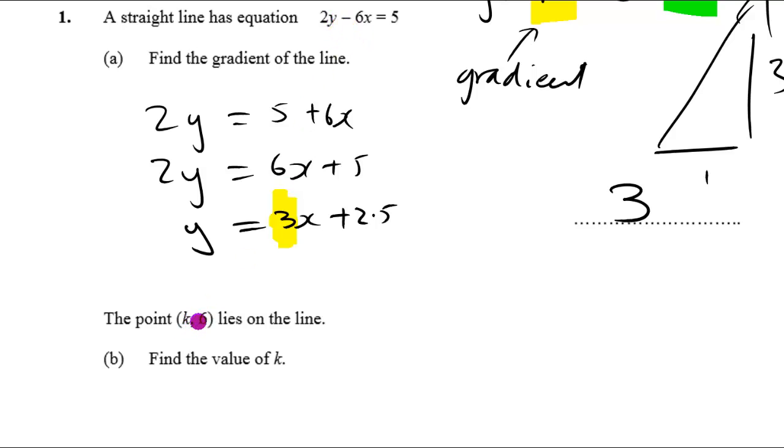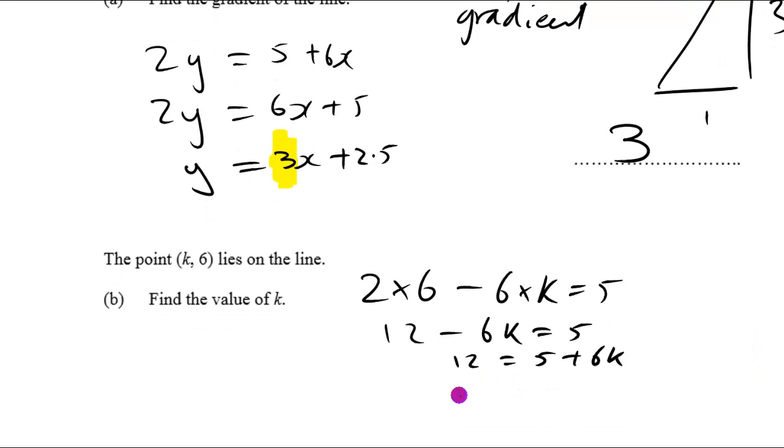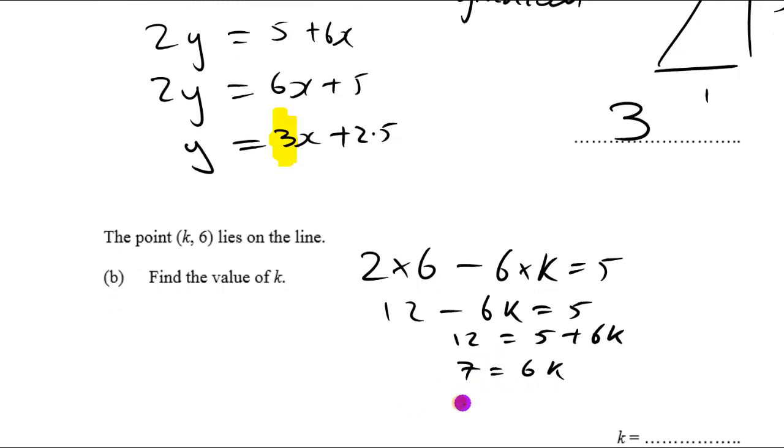So we've got k is the x value and y is 6, so we've got 2 times 6 minus 6 times k equals 5. So we get 12 minus 6k equals 5. Let's take the 6k to the other side to get 12 equals 5 plus 6k. Take away the 5 from both sides and we get 7 equals 6k. Therefore, divide both sides by 6, we get 7 over 6 equals k.